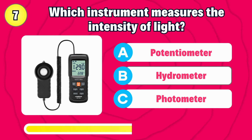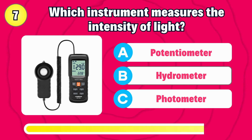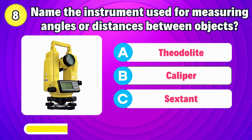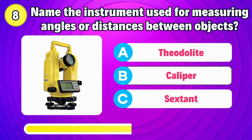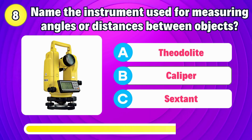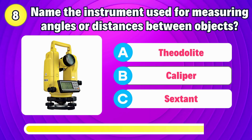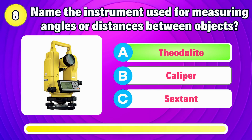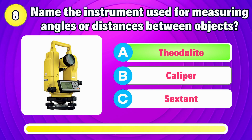Which instrument measures the intensity of light? That's right, it's photometer. Name the instrument used for measuring angles or distances between objects. Correct, it's theodolite.